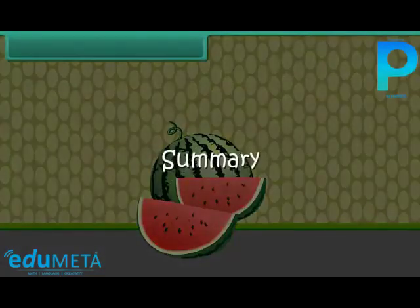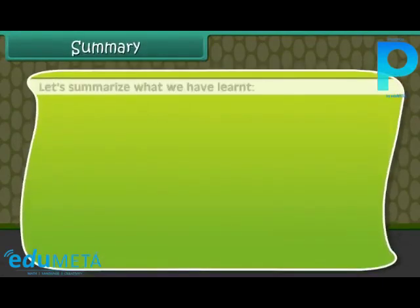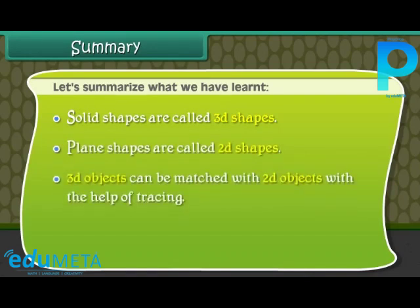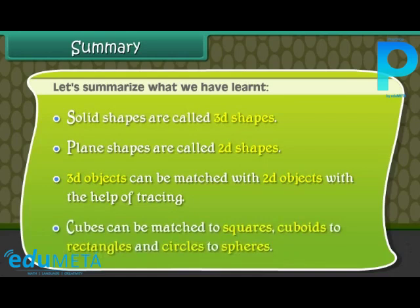Summary: let us summarize what we have learnt. Solid shapes are called 3D shapes, and plane shapes are called 2D shapes. 3D objects can be matched with 2D objects with the help of tracing. Cubes can be matched to squares, cuboids to rectangles, and spheres to circles.